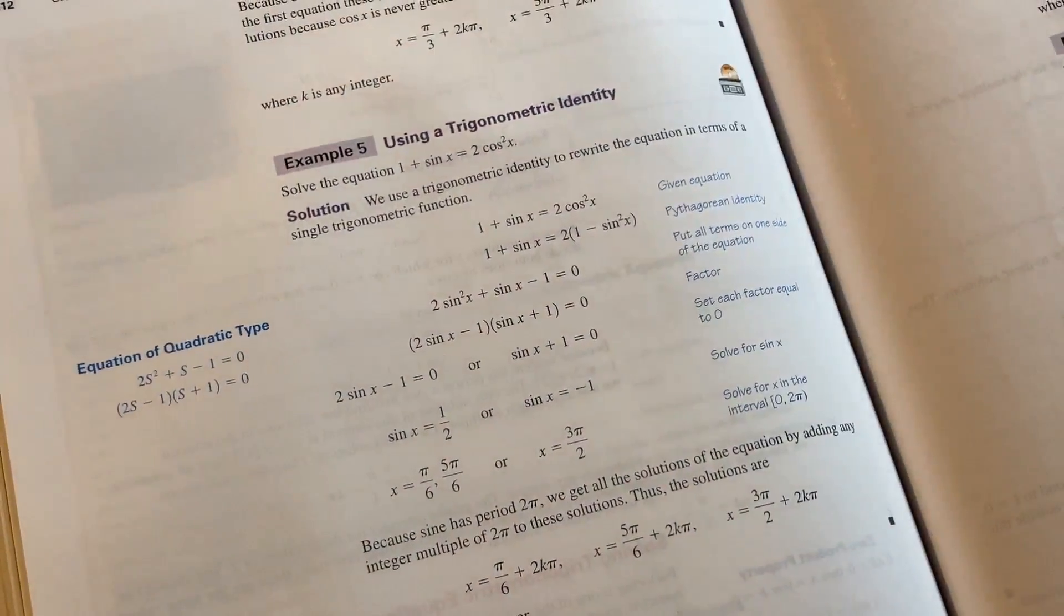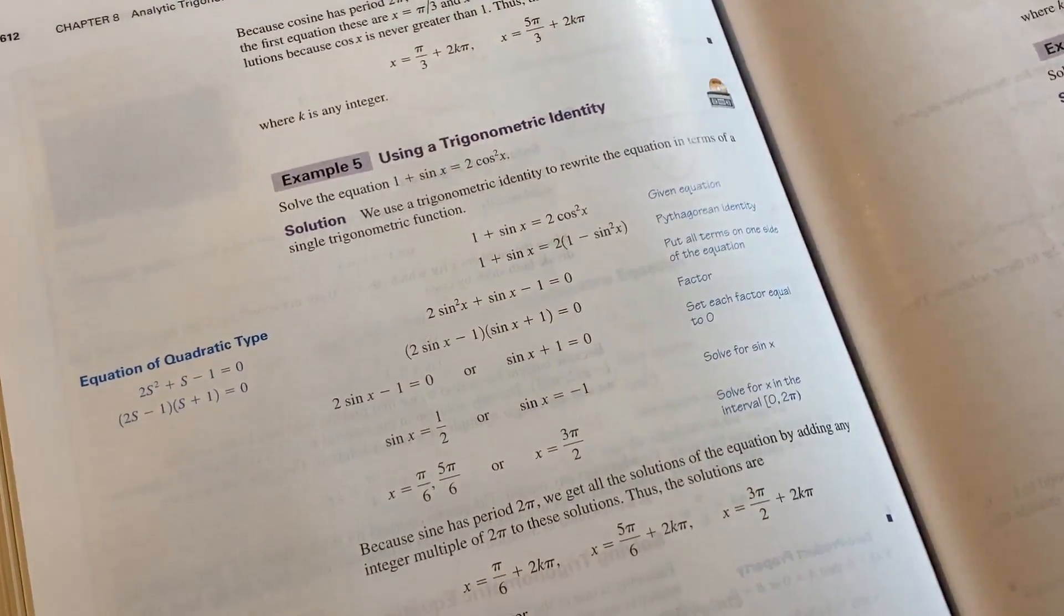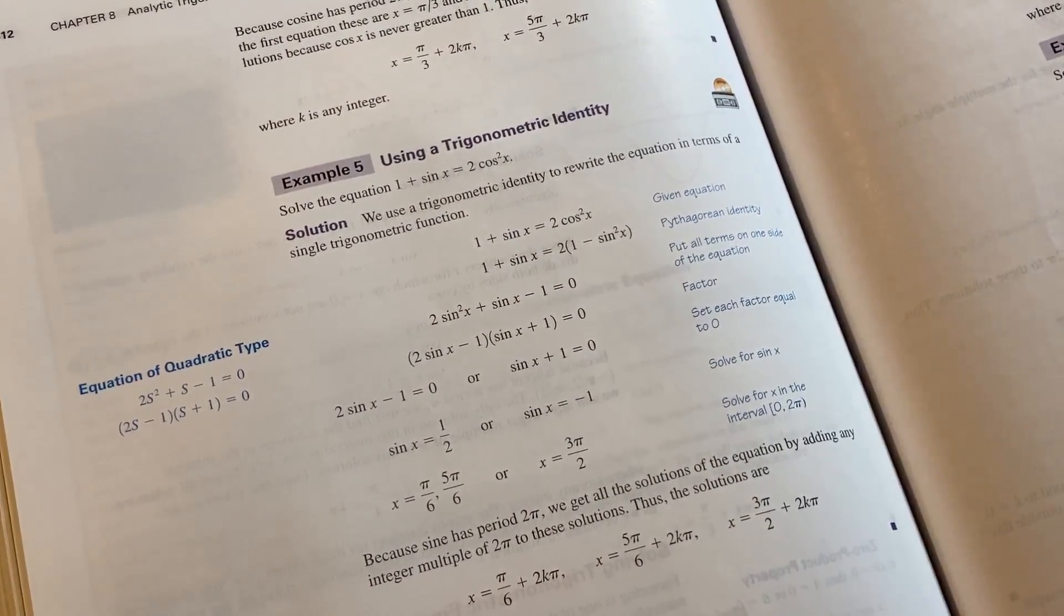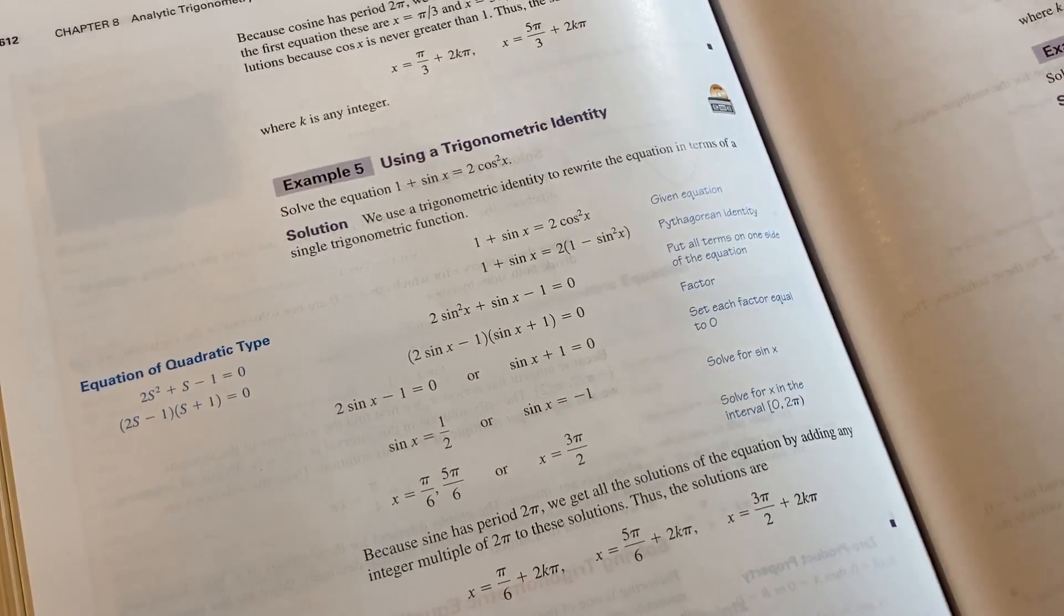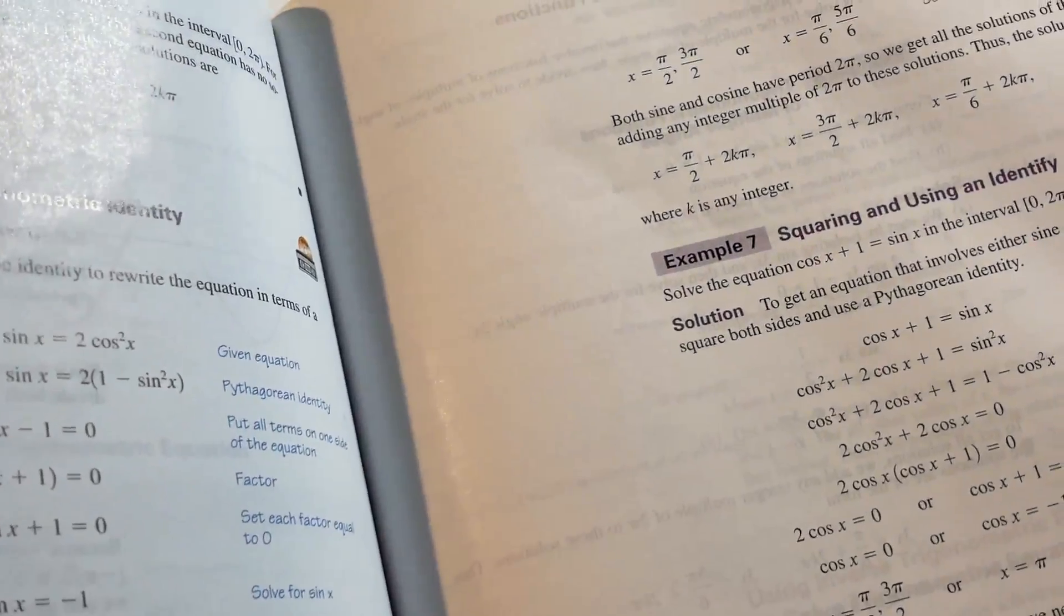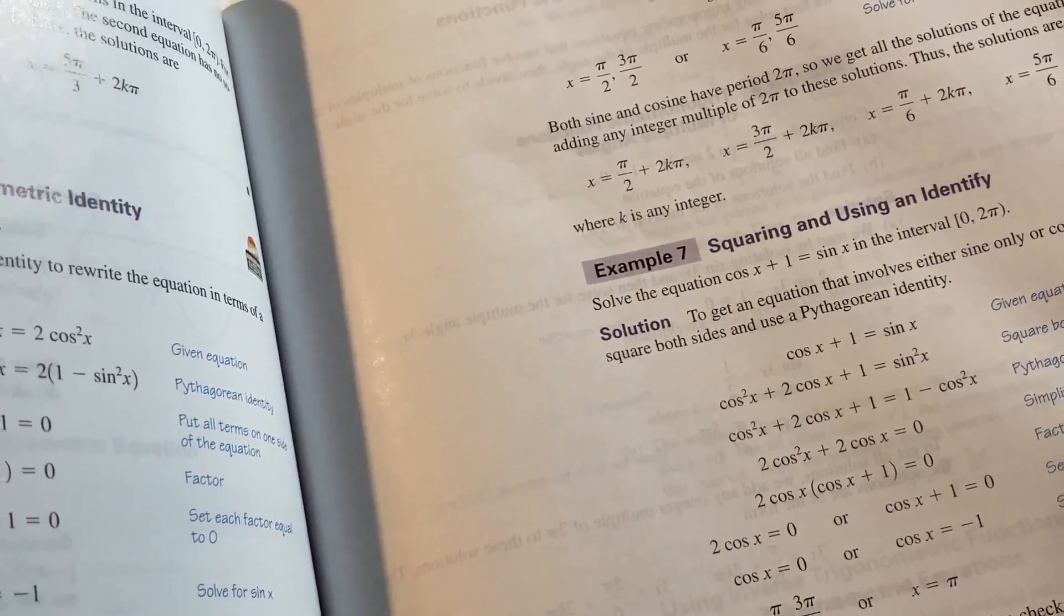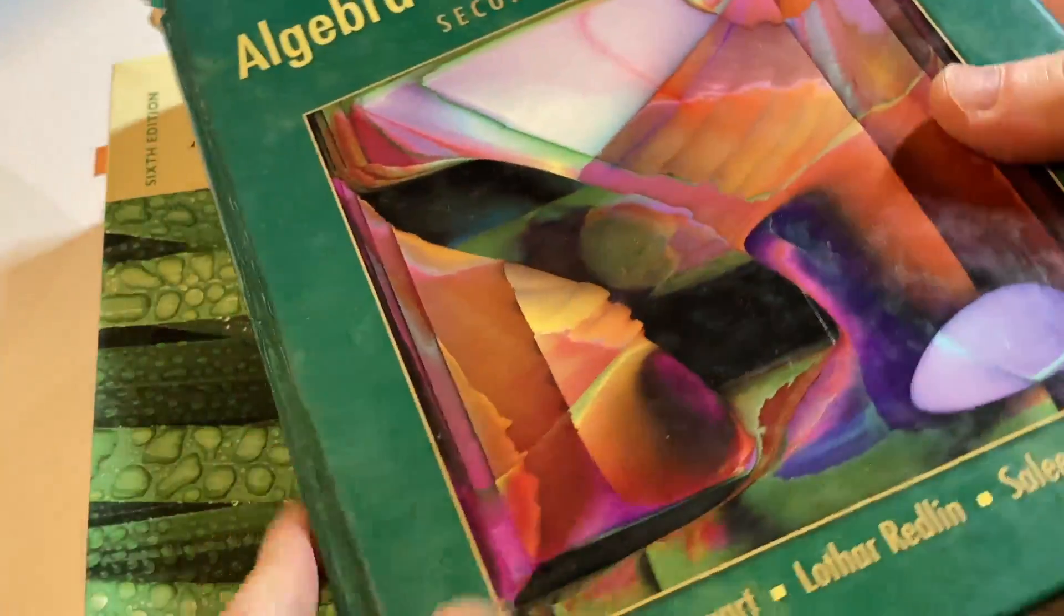But you learn, right? It's all about learning. Lots of examples. Here's one where you have to use a trig identity: 1 plus sine x equals 2 cosine squared x. And here's one where you square it and use an identity. Lots of examples. Wonderful book. That's one great book, excellent, just one of the best books out there.